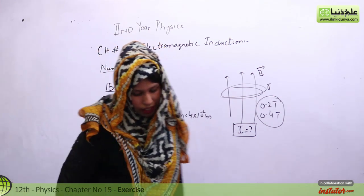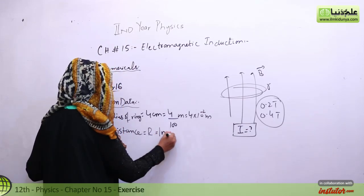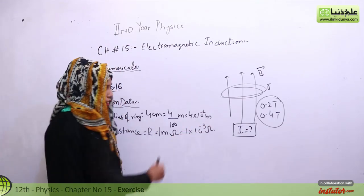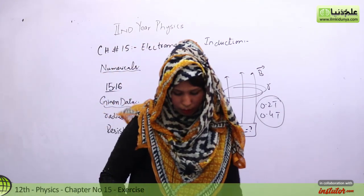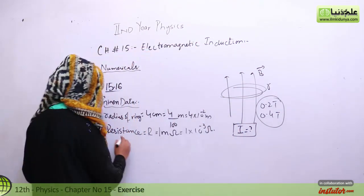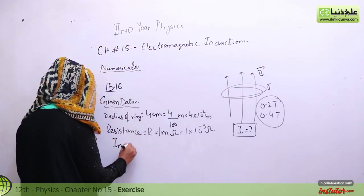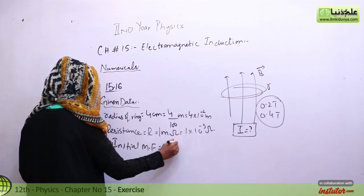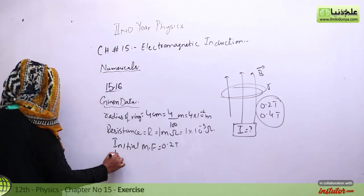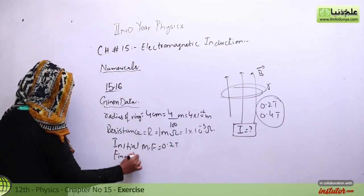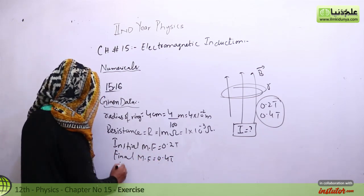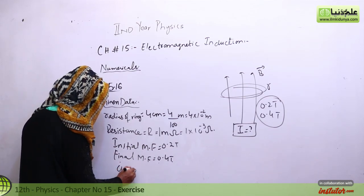Next, we have the resistance of the copper ring, which is 1 milli-ohm, or 1 times 10 to the power minus 3 ohm. Next, the initial magnetic field is 0.2 tesla and the final magnetic field is 0.4 tesla.